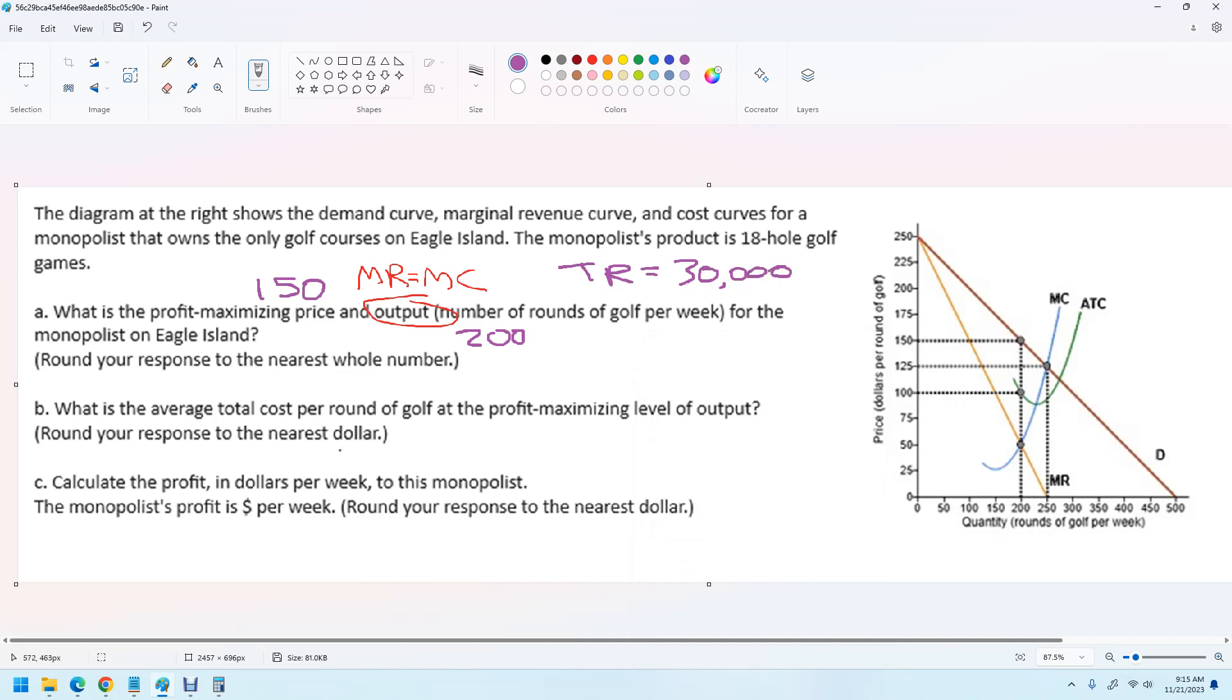Okay. And now average cost per round. So we're right here and we're going to come, we're going to find wherever average total cost is. We've come down here. Average total cost is 100. So 100 would be the average total cost per round. And then the total cost, in case you were trying to figure that out. That would be the average total cost, which is a hundred times 200, which would be the quantity there.